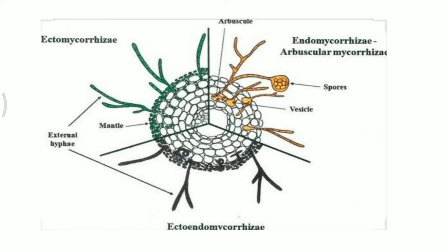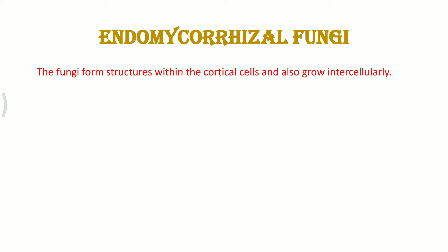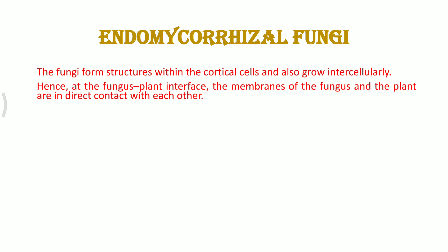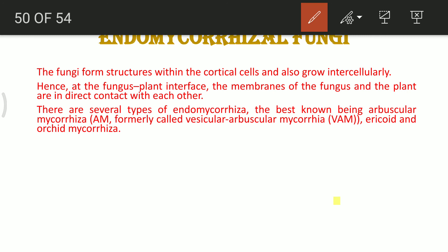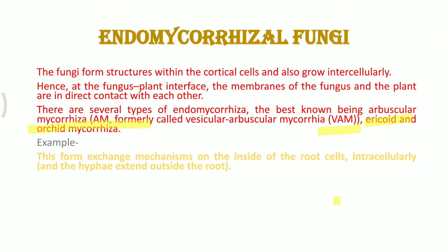Endomycorrhizal fungus is present inside the cells of the roots of the plant. In the cortical cells, they reach up till the cortex region. The membranes of the fungus and the plant are in direct contact with each other. The three best known types of endomycorrhizal fungi are VAM, ericoid, and orchid mycorrhiza. This form has intracellular exchange mechanisms on the inside of the root cells.